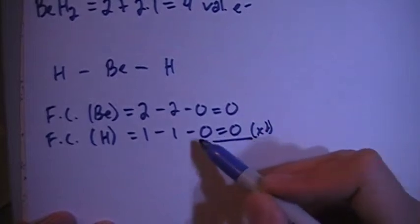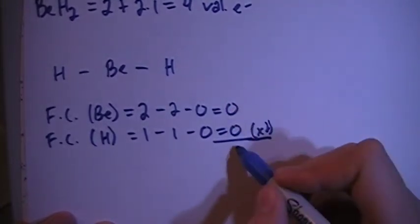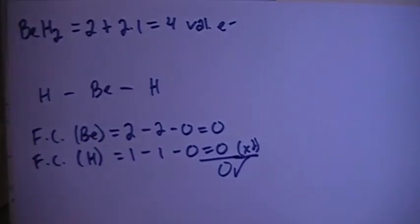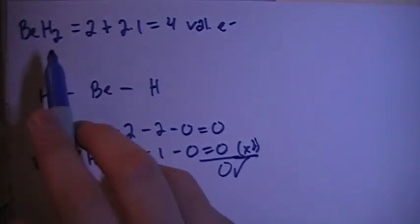Multiply that times two because there's two hydrogens with the same setup. Overall formal charge is zero. That's what we're looking for because this is a non-charged particle. So zero formal charge, neutral particle. That's what it's supposed to be. Now we can talk about the shape.